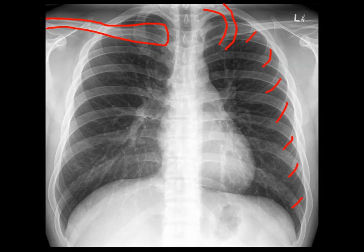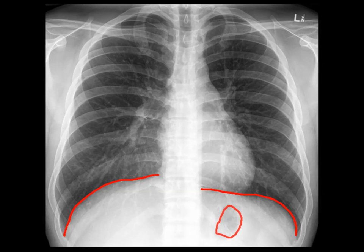The next bit outlined is the right clavicle. The borders of the diaphragm are outlined here. Notice that the right hemidiaphragm is higher than the left — this is normal and is due to the liver lying underneath. On the left side, you might see a bubble under the diaphragm. This is a gastric bubble in the stomach and is a normal finding.